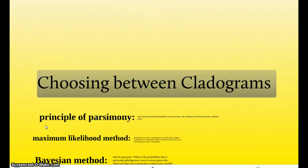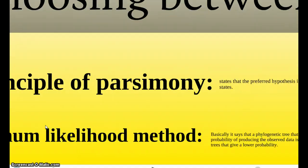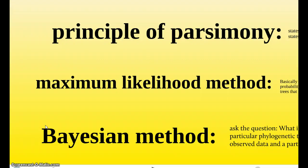Usually scientists, they have a lot of cladograms of the same group of species. And they need to figure out which one is the best so they can publish it into the scientific world. So, we'll use these three principles. The first is called the principle of parsimony. And this states that the preferred hypothesis or cladogram is the one that is the simplest for all the characters and their character states. So, that's one thing they would use.